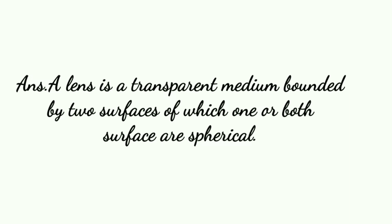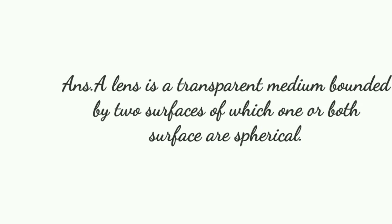Lens kya hothay hain? Yeh transparent medium hothay hain. Jaise ki jisko dhekne mein problems hothay hain, unke jo specs hothay hain — unke specs mein lens laghe hoa hothay hain. Woh transparent hothay hain, tab bhi usme se light pass hothay hai. So lens transparent medium hai jo do surfaces se banta hai, jis mein se ek ya dono surfaces spherical hothay hain.